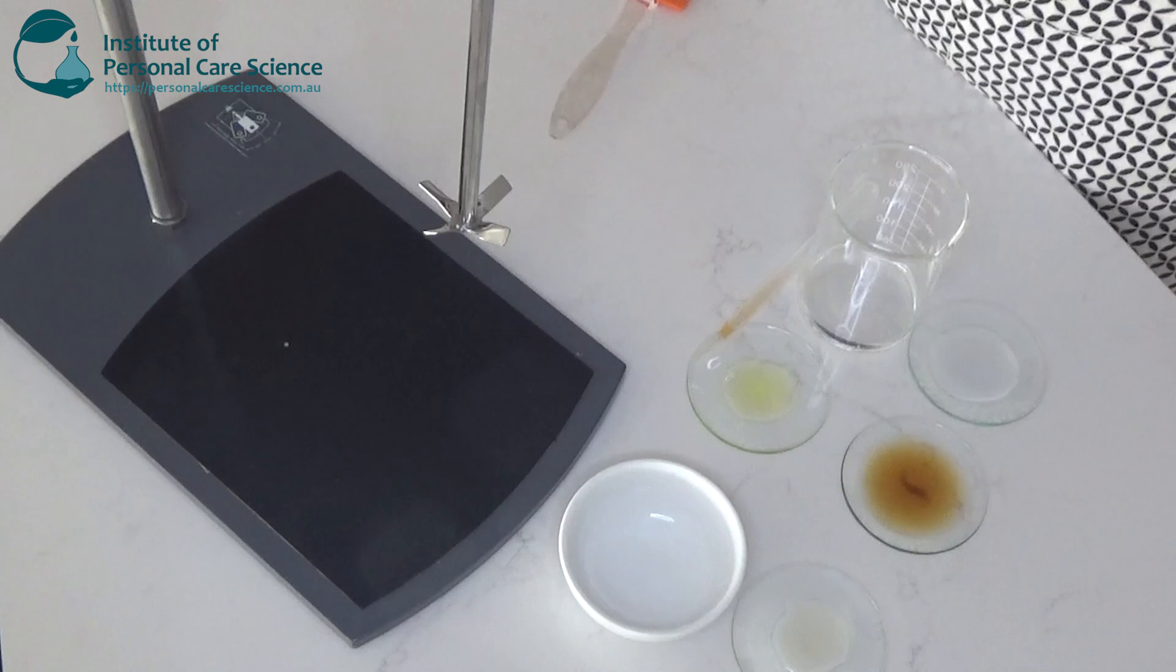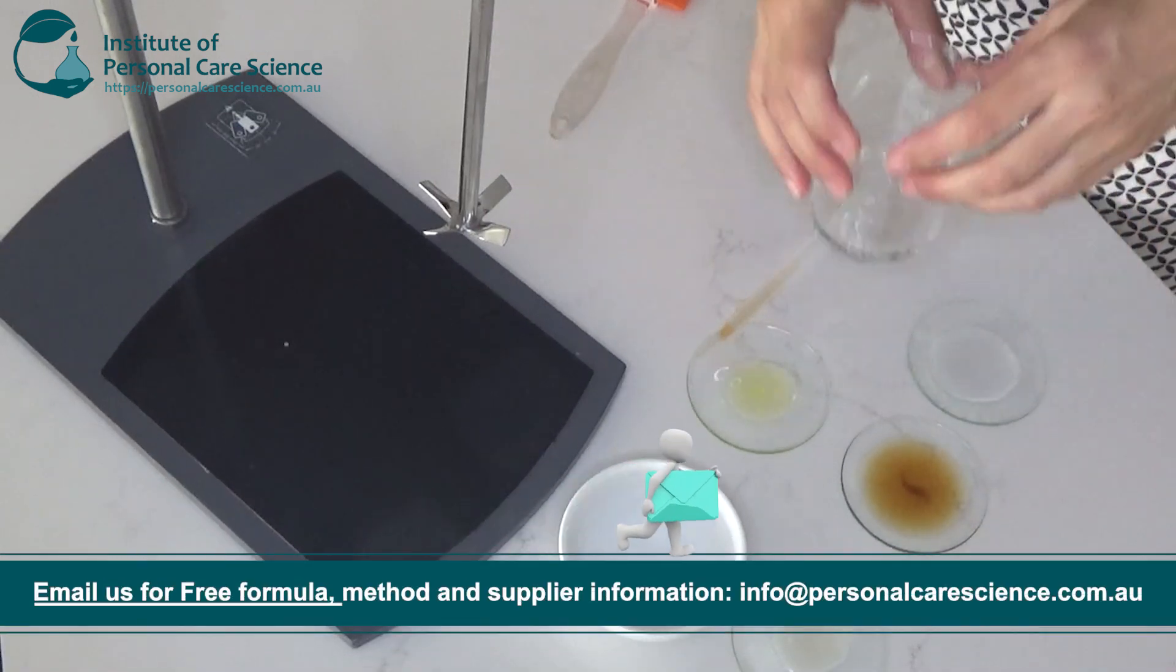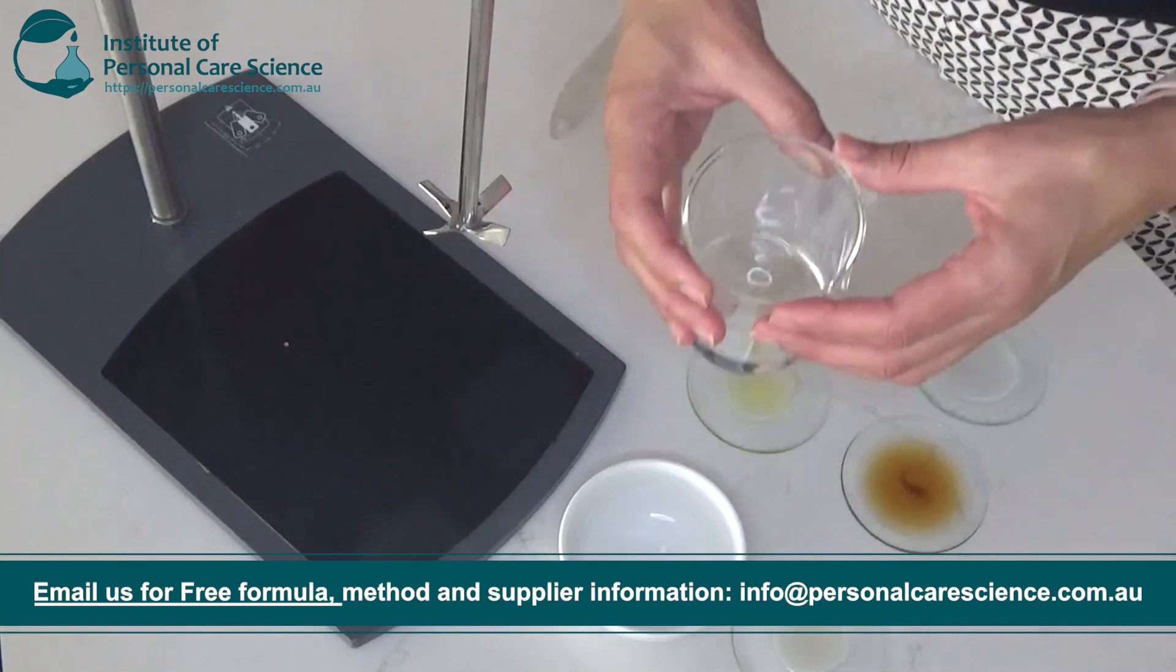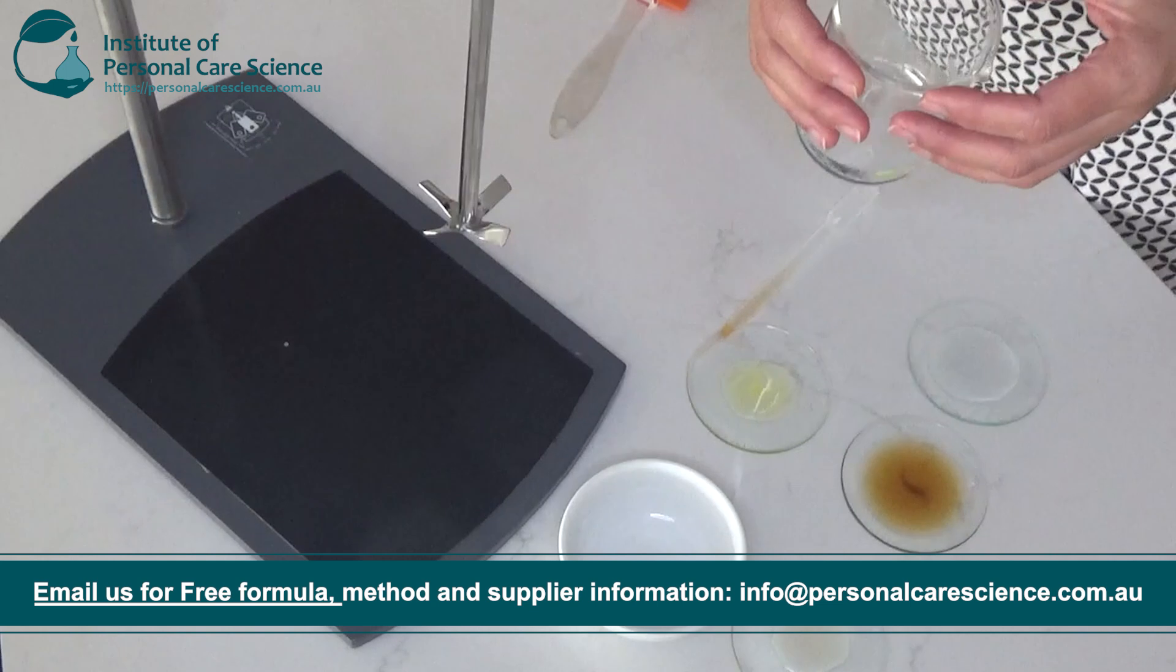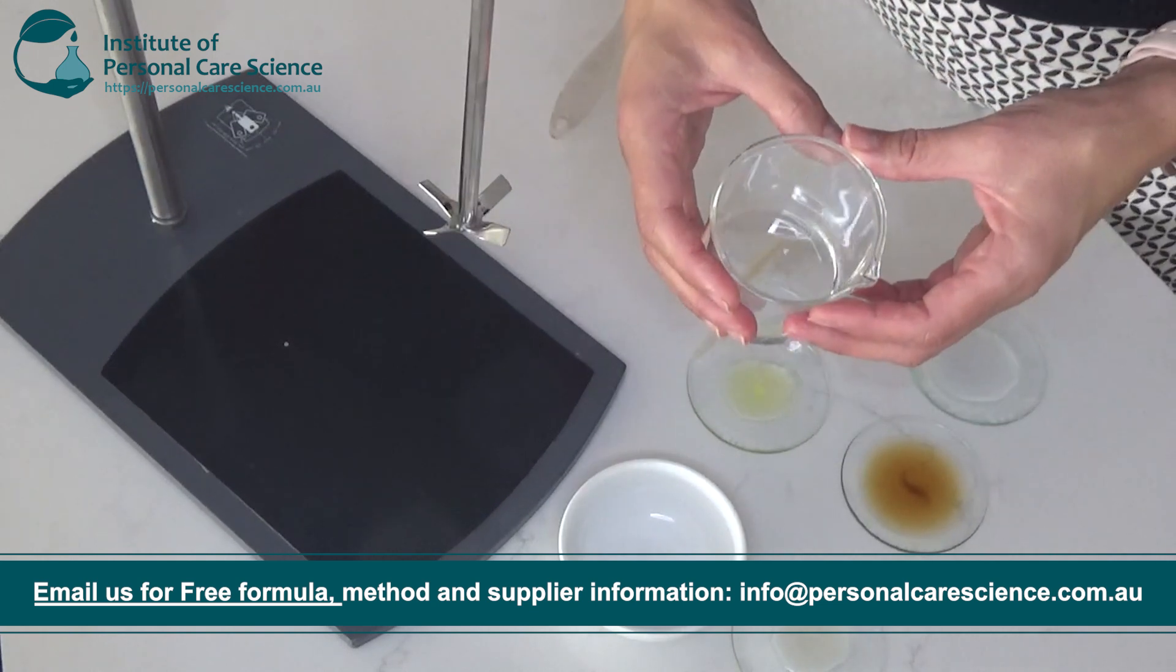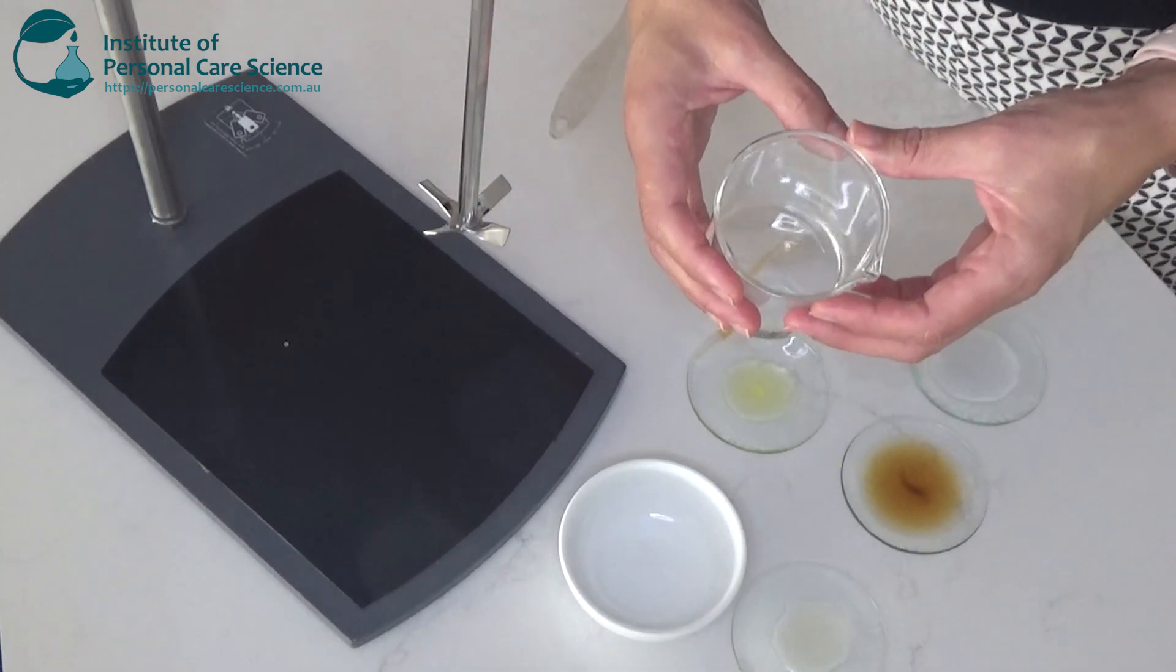I'll start with the lipid phase. I have here some isomaltorate which is naturally derived and an excellent choice for an eye cream due to its lightweight, non-greasy emollient properties and skin conditioning benefits.